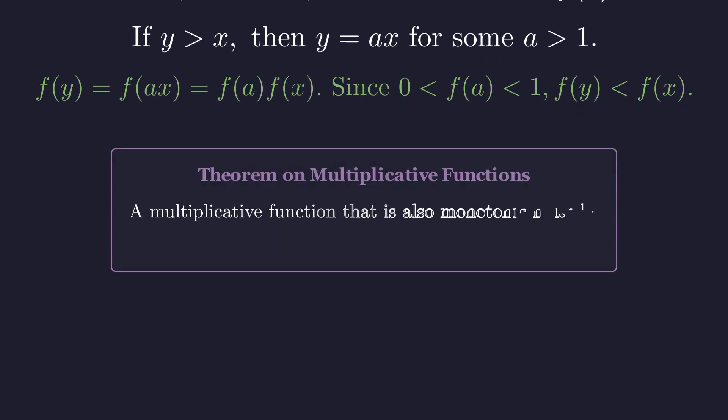This leads to another beautiful theorem. A function that's both multiplicative and monotonic must be a power function. Having proven monotonicity, we can again conclude f of x equals x to the k, and the rest of the proof follows as before. It's a completely different path to the same rigorous conclusion.